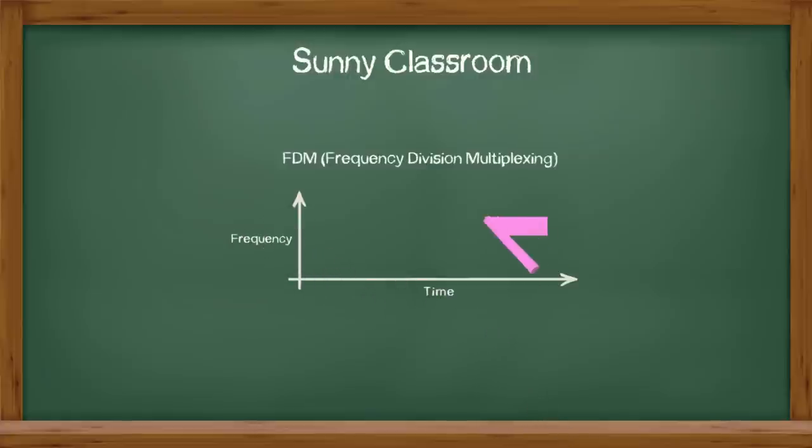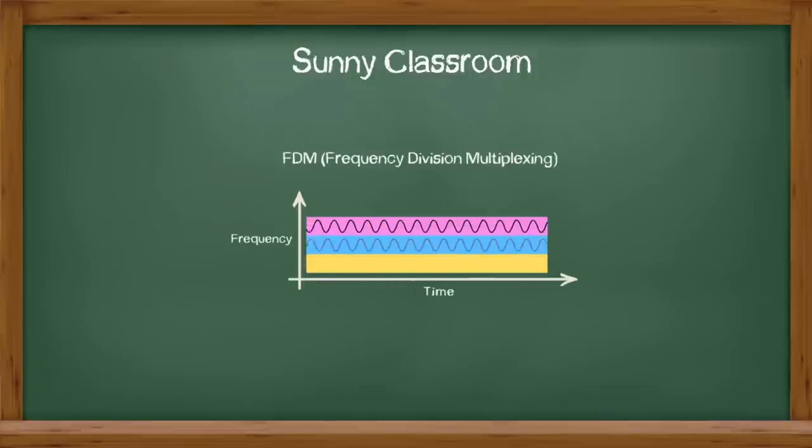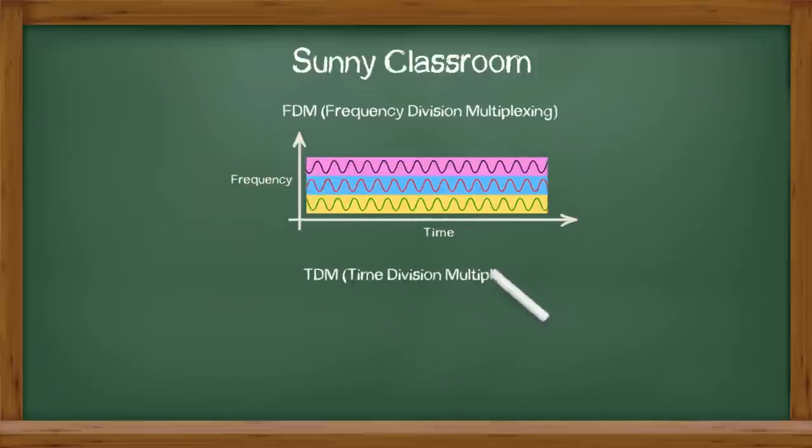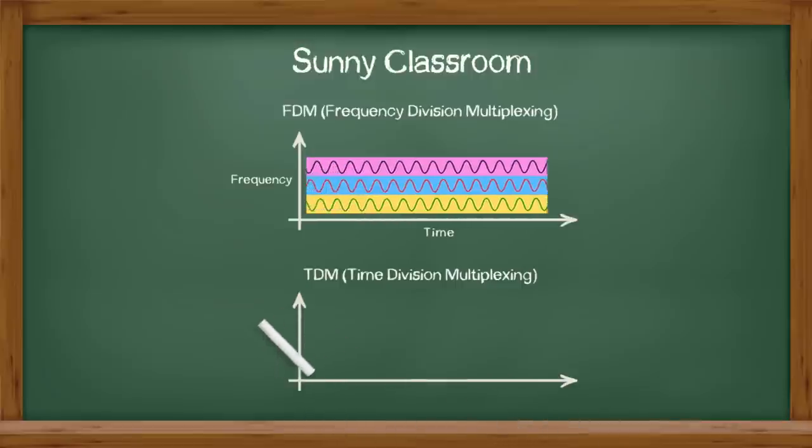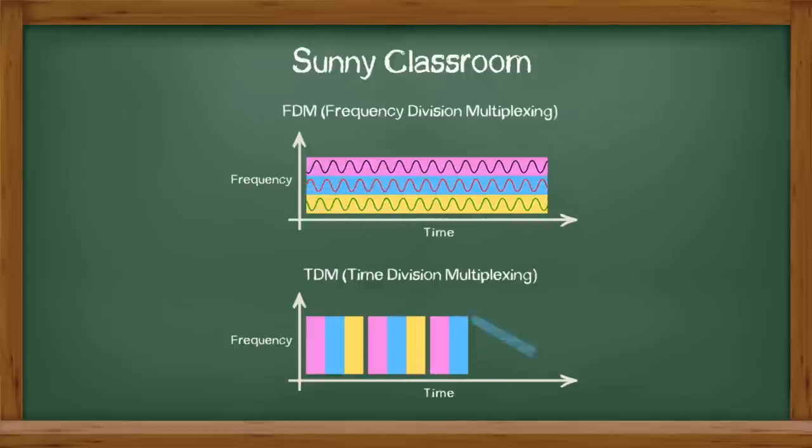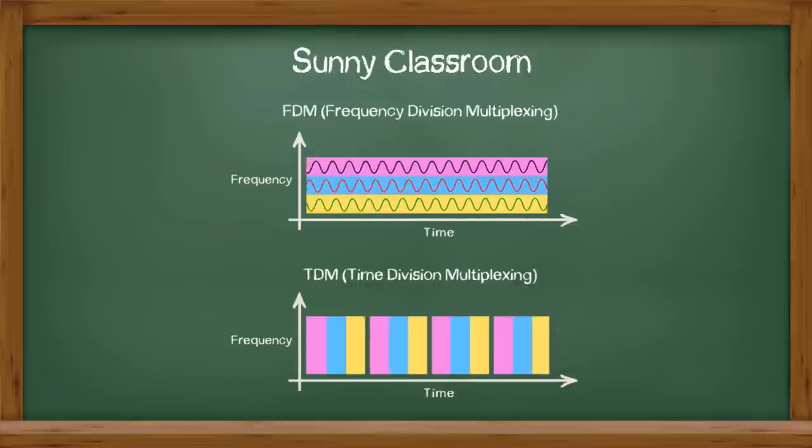For analog signals, frequency division multiplexing, or FDM, is used to make analog signals share one common media. For digital signals in a baseband system, time division multiplexing, or TDM, is used to transmit different users' data over one common media. TDM divides time into slots or intervals, and assigns them equally to these users.